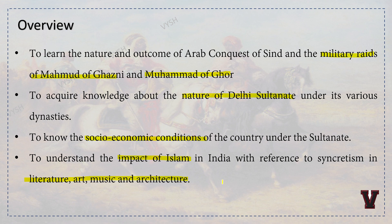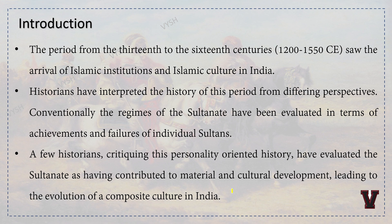This class will be Part 1 of the chapter, covering the first half. Introduction: The period from 13th to 16th centuries — 1200 to 1550s — saw the arrival of Islamic institutions and Islamic culture in India. As we have read in previous chapters, most of the southern part of India saw smaller kingdoms emerge as soon as emperors died, dividing their empires.